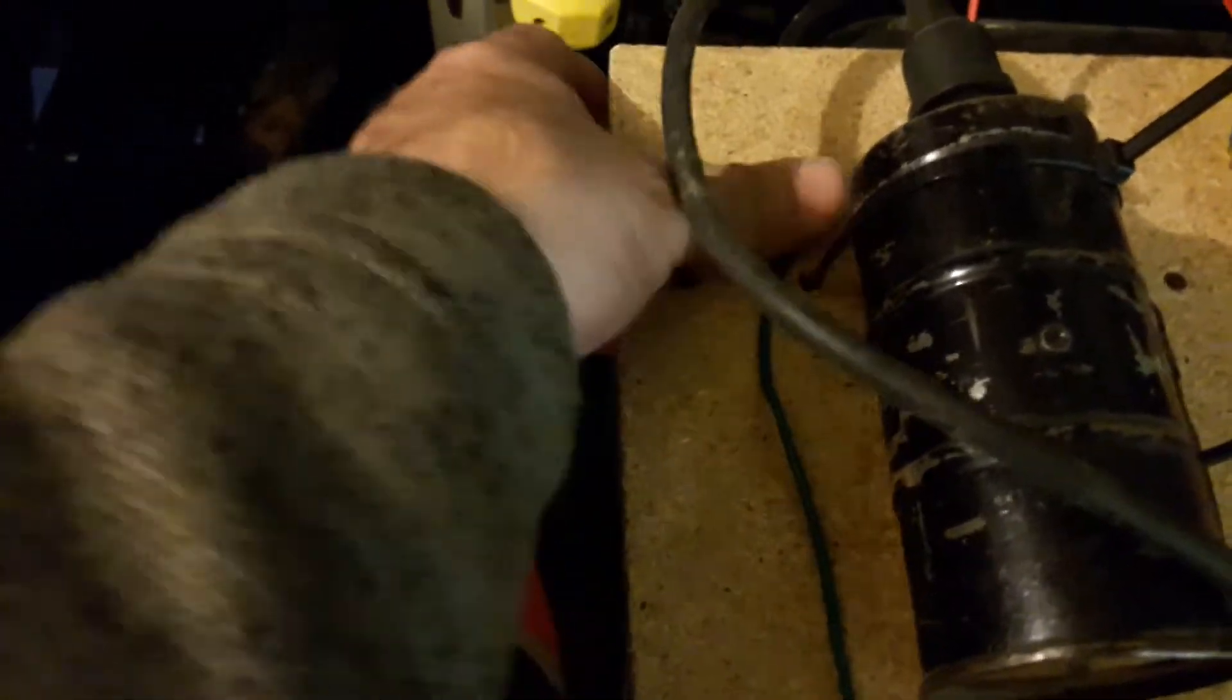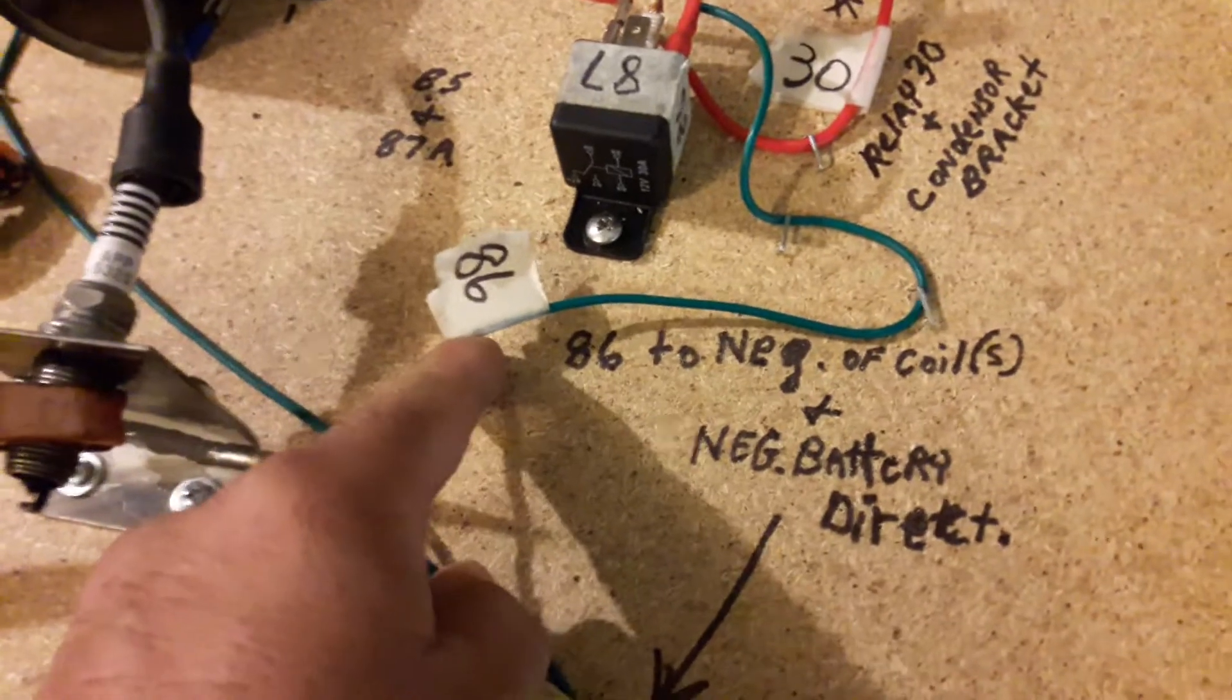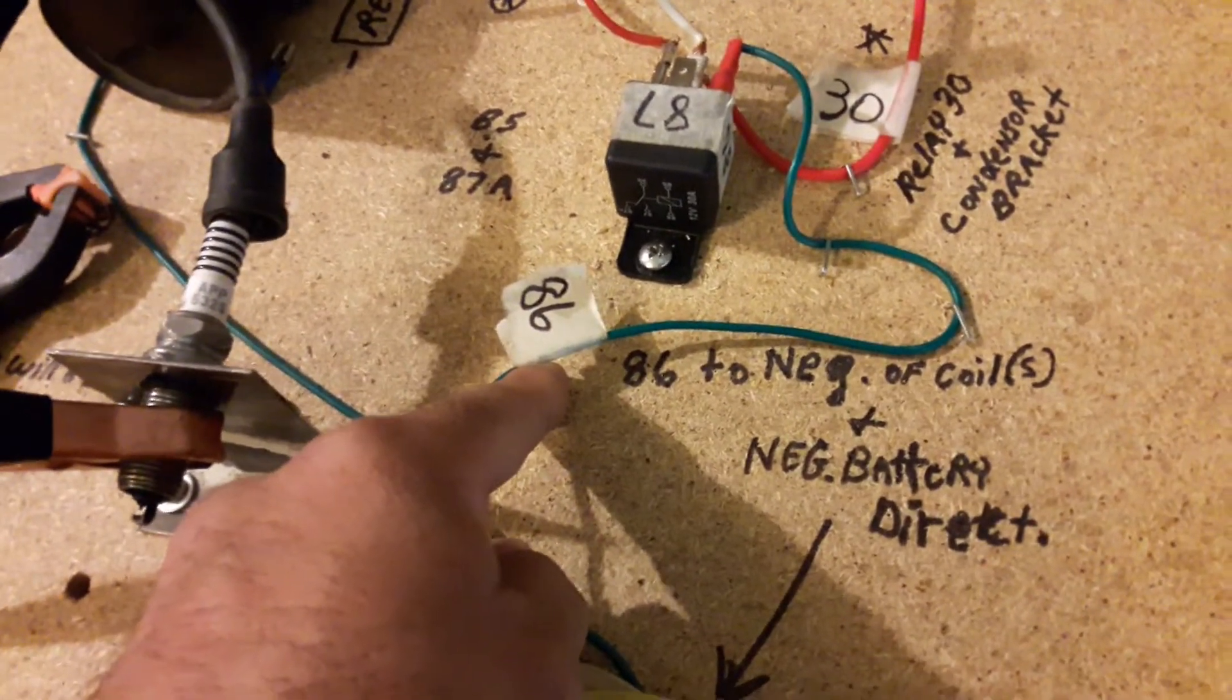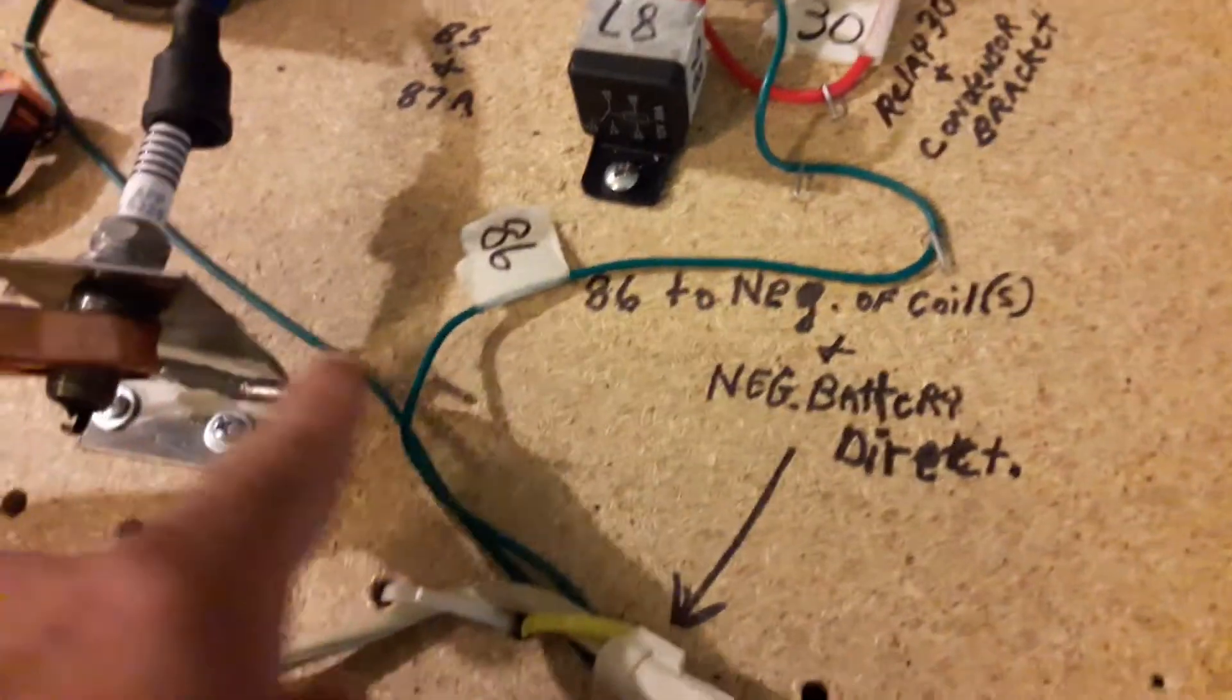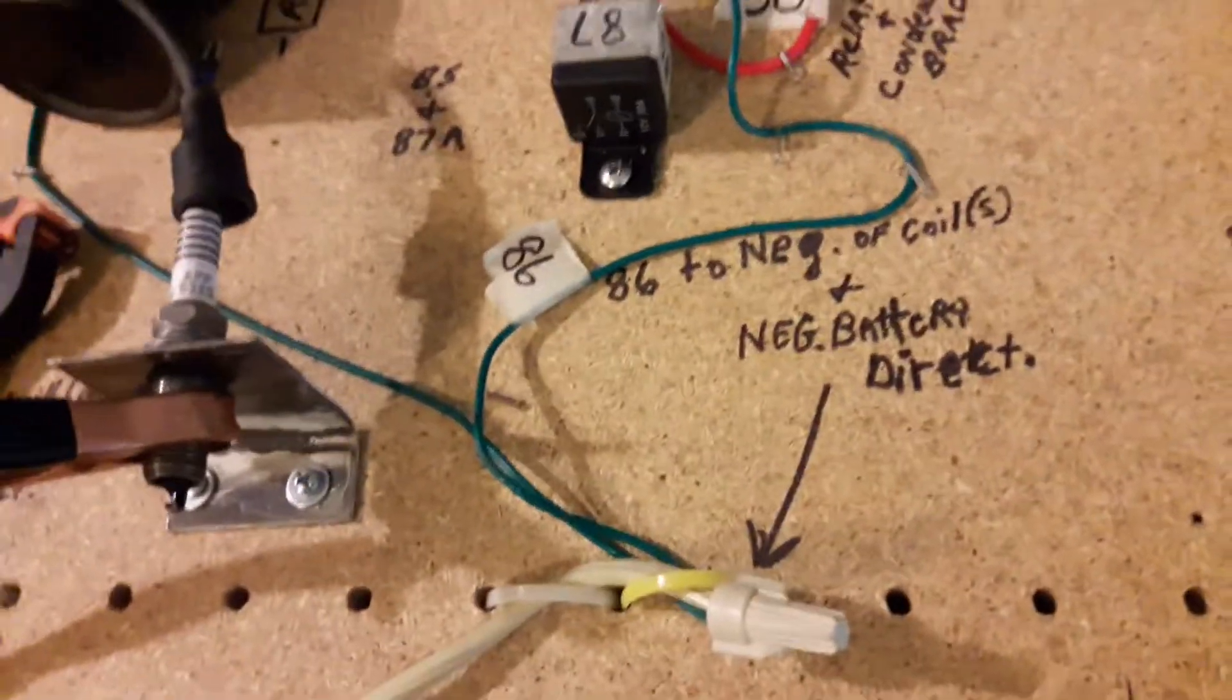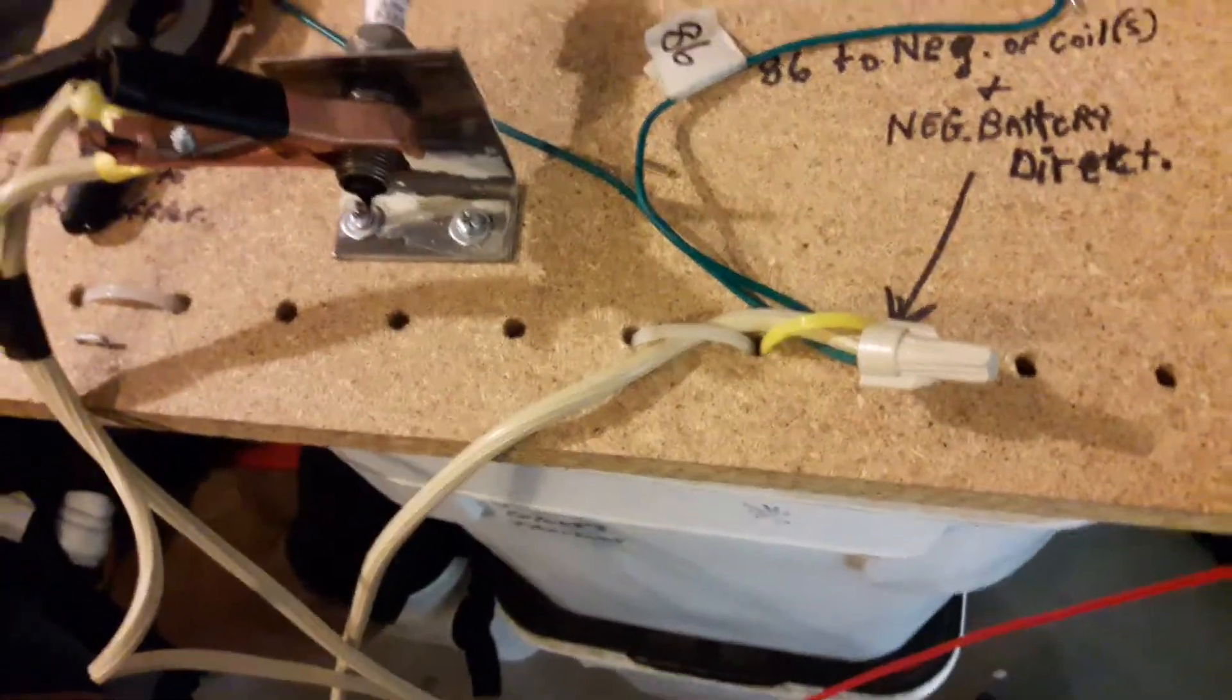On the negative side, you're going to come back and go to spade number 86 to negative of coil or coils. I got two coils, so I'm just doubling up on everything. Number 86, and then I went battery direct, so that's my ground. Again, negative to 86 to your battery ground. That's basically all your wiring.